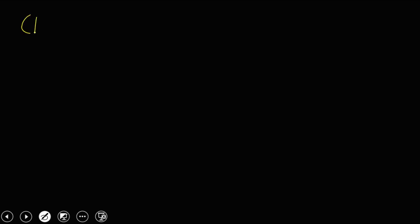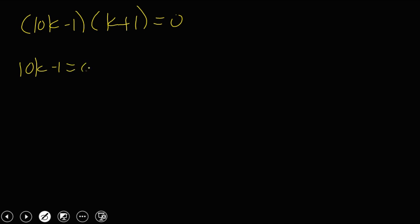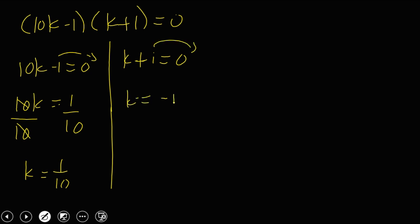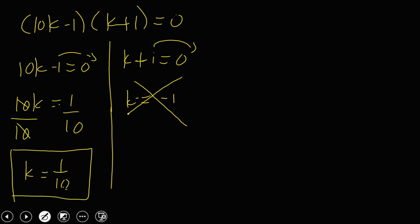To solve for K, equate each factor to 0. From 10K minus 1 equals 0: 10K equals 1, divide by 10, so K equals 1 over 10. From K plus 1 equals 0: K equals negative 1. Since one property of probability distribution states that the probability is greater than 0 — therefore always positive — the value of K is 1 over 10. K equals negative 1 is rejected because it is negative.